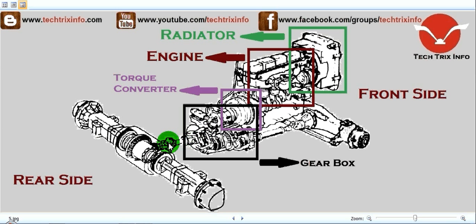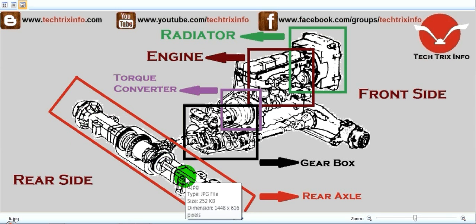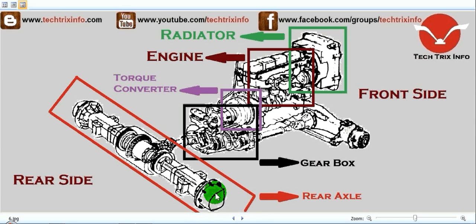From the output shaft, the drive goes towards the propeller shaft. This unit, as you can see, is the propeller shaft, which takes the drive from the output shaft of the gearbox towards the rear axle. Here this is the rear axle.